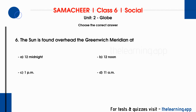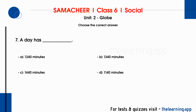Question 6: The sun is found overhead the Greenwich Meridian at. Options are A. 12 midnight, B. 12 noon, C. 1 pm, D. 11 am. Correct answer is B. 12 noon.